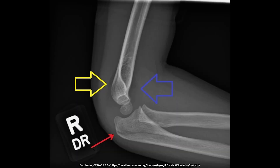In this lateral elbow x-ray of a patient who fell on their arm, we apply our three steps. We start by assessing the bones: checking the edges of the humerus for any fractures — none found — then the radius, and then the ulna, where we can identify an olecranon fracture.